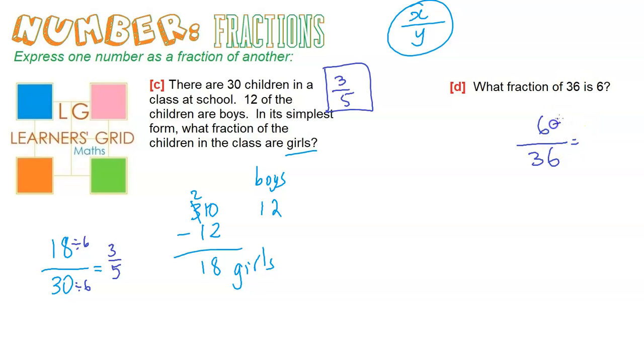If I simplify, divide the top and the bottom by six - that's the largest factor that will go into both - that gives me one. So six divided by six is one, 36 divided by six is six. And that is the answer to question D.